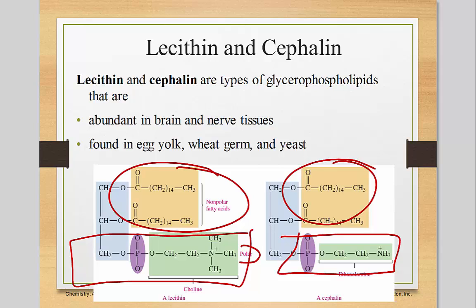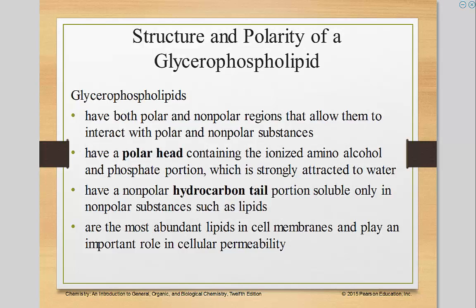Because this portion is nonpolar, it doesn't interact with water. However, this polar side can. Glycerophospholipids have both polar and nonpolar regions that allow them to interact with polar and nonpolar substances, such as water and oils. They have a polar head containing an ionized amino alcohol and phosphate portion, which is strongly attracted to water. They have a nonpolar hydrocarbon tail from the fatty acid, soluble only in nonpolar substances such as lipids. They are the most abundant lipids in the cell membrane and play an important role in cell permeability.